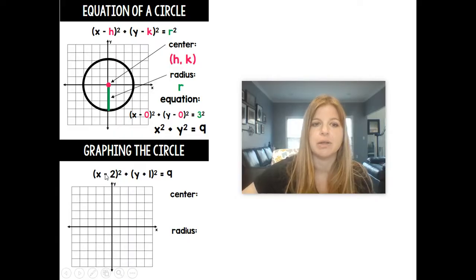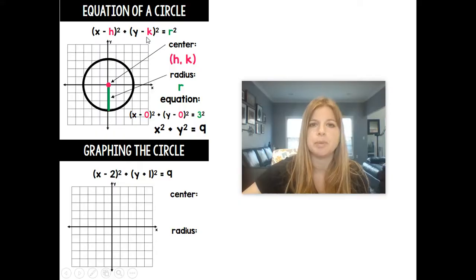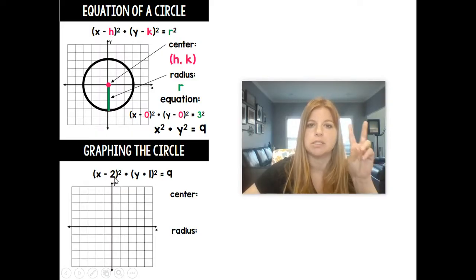If I wanted to graph the circle based on an equation that I would give you, we would have to look at this equation here and use this formula to figure out what the center actually is. So here it says x minus h and I have x minus 2. So that would mean my h value is 2. In my second part for my y value, the formula is y minus k, and I see I have y plus 1. If my k value was a positive 1, it would say y minus 1.